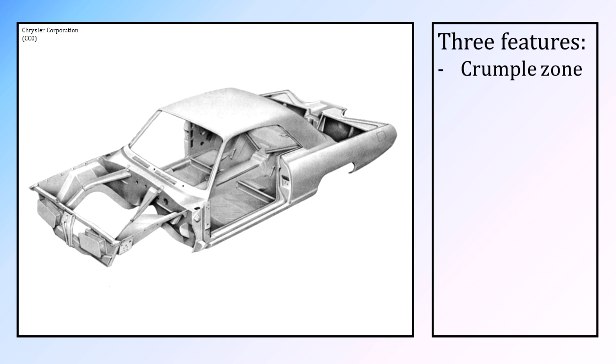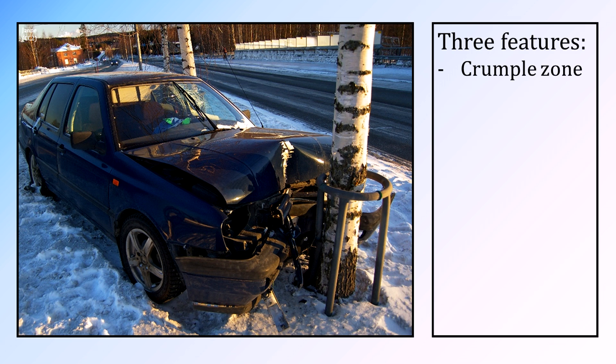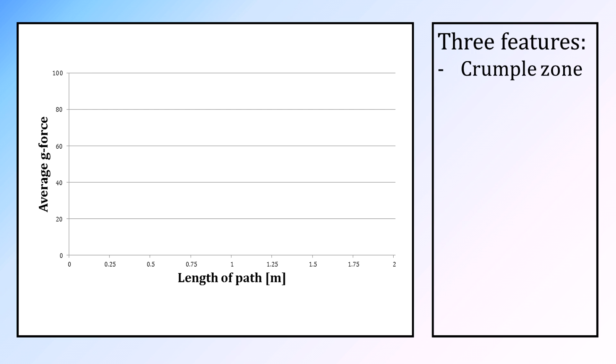Did you know that the front part of your car is actually not that rigid? You can see that even in a relatively small collision, the outer part crumples a lot. This will extend the length of the path in which your body decelerates to zero, which reduces G-forces by more than 50%.